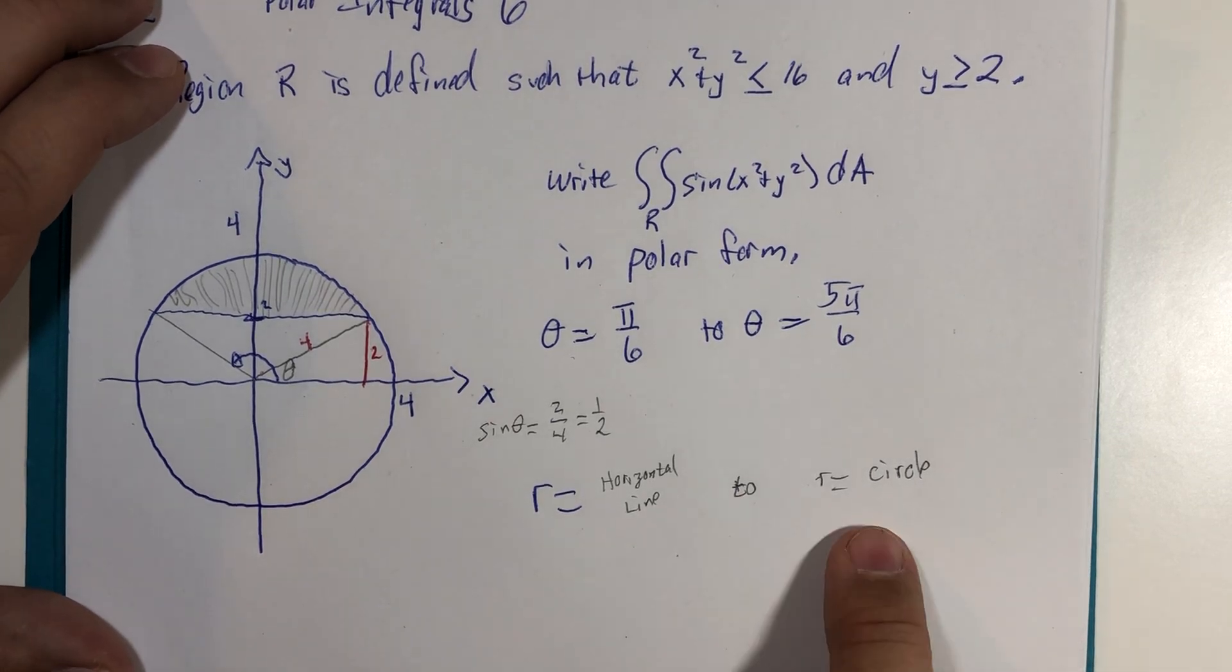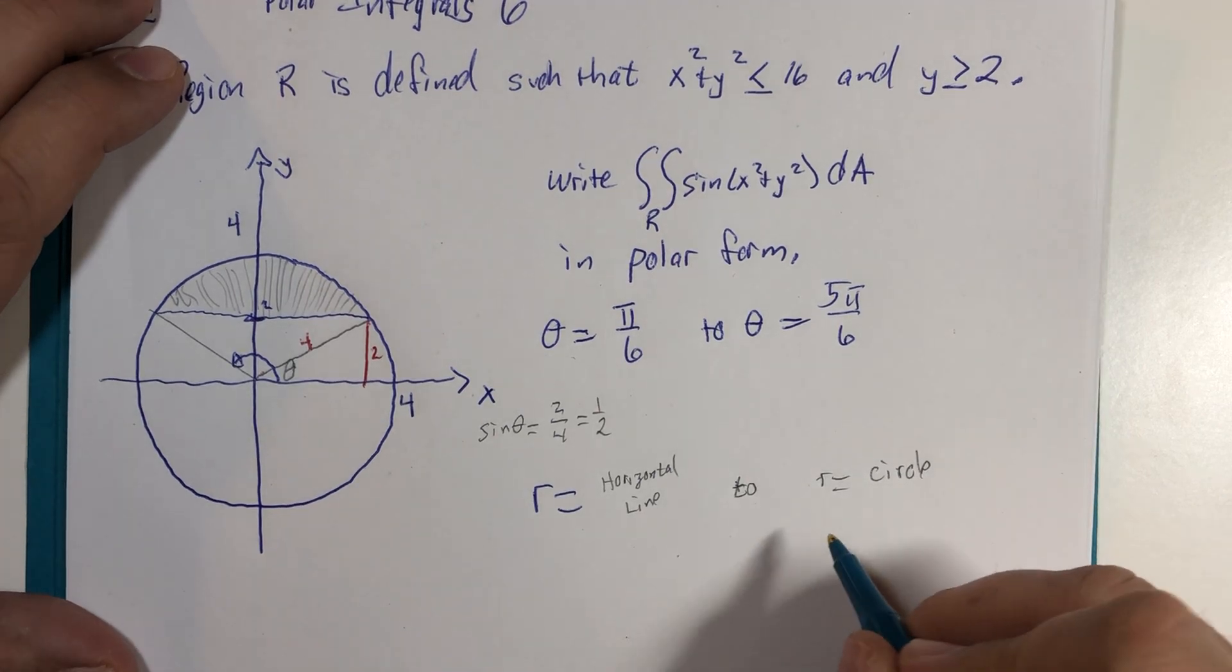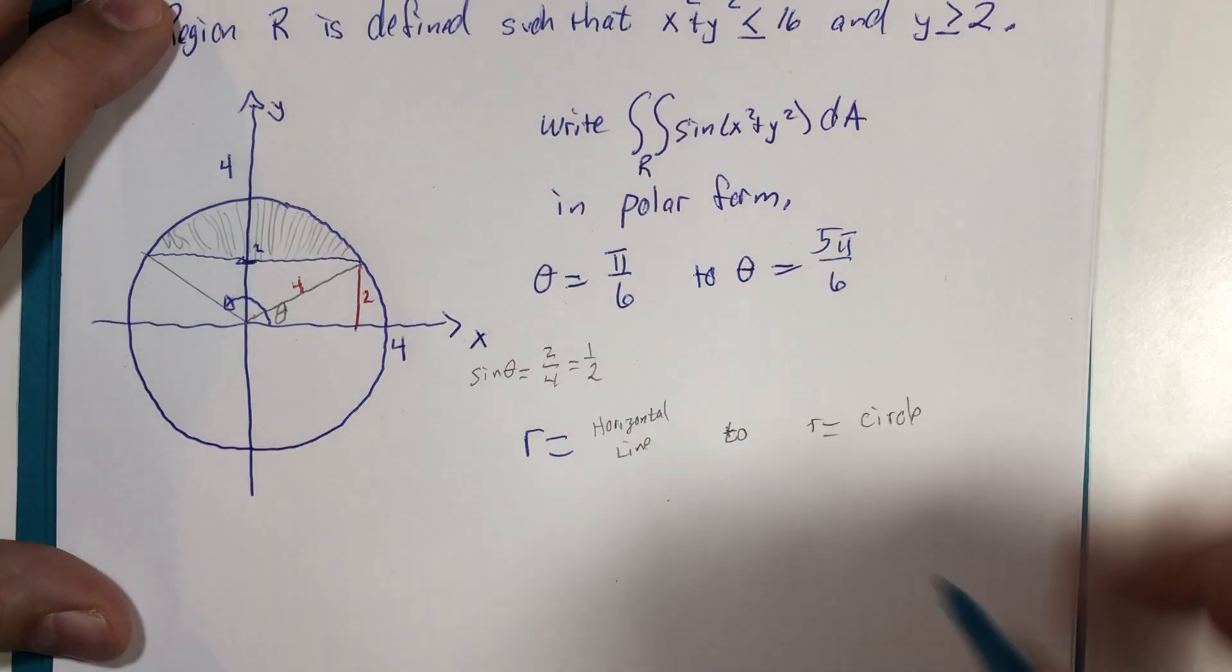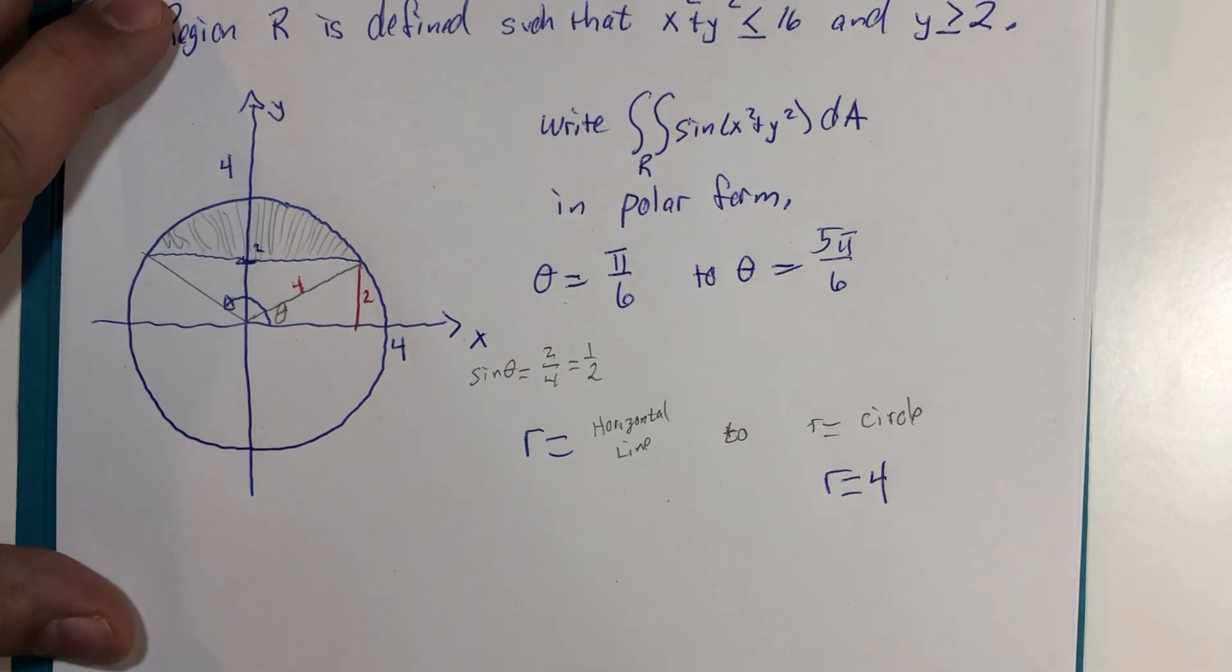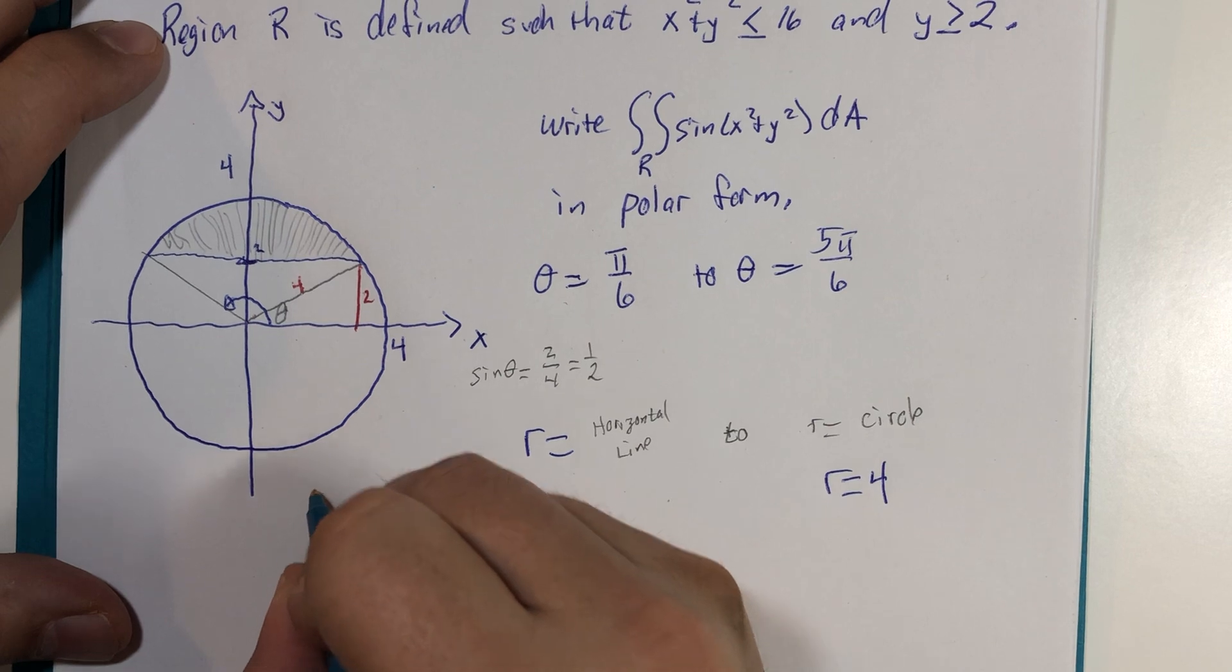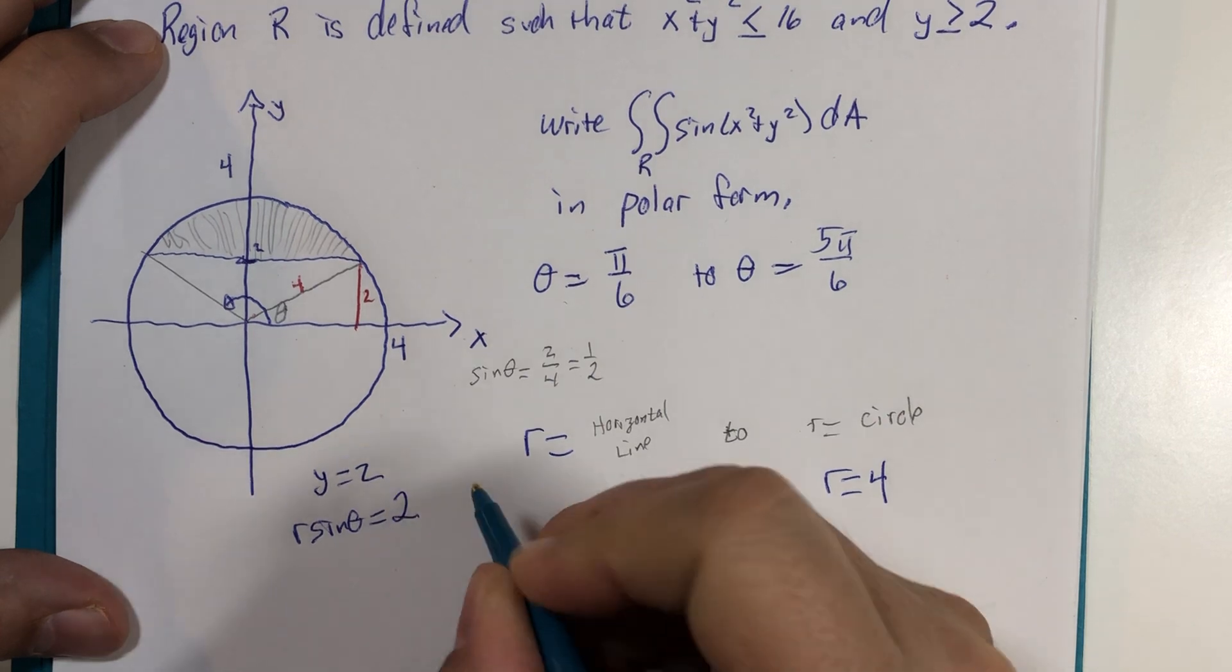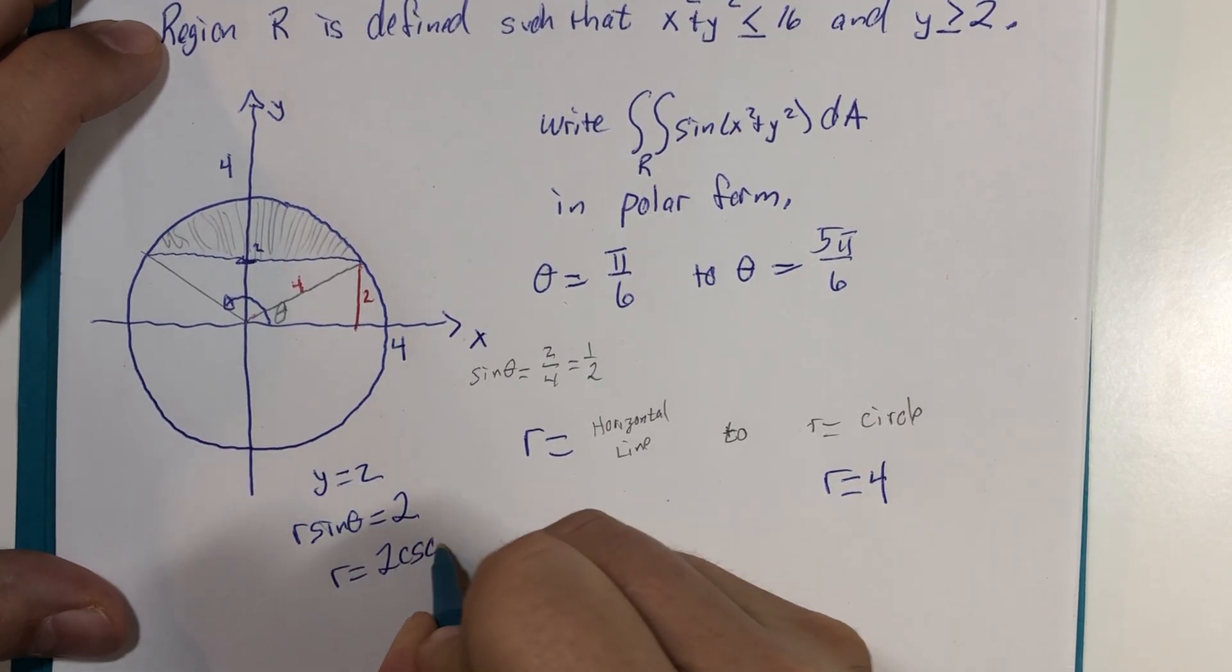The circle has an equation that's not too bad at all. X squared plus y squared equals 16 is the same as the polar equation r equals 4. The horizontal line y equals 2: r sine theta would therefore equal 2, so therefore r equals 2 cosecant of theta. That would be our other r boundary.